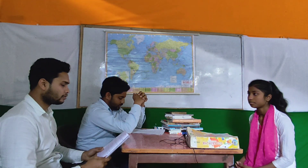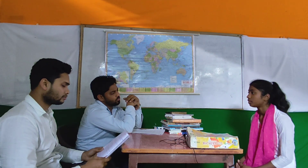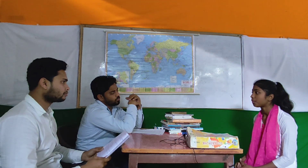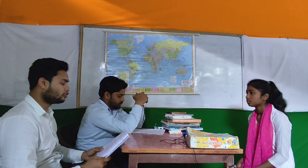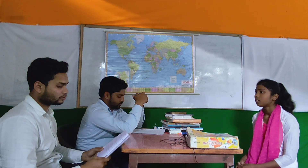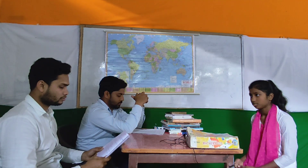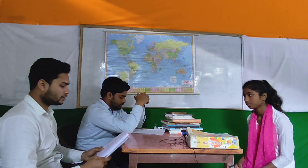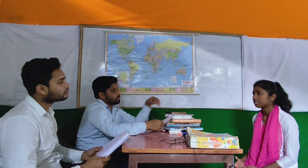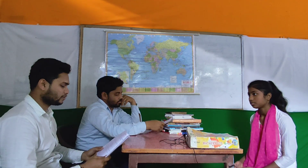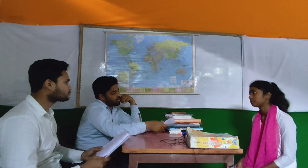What is the reciprocal of P upon Q? The reciprocal of P upon Q is Q upon P. What is the formula of volume of a cone? One upon 3 pi r squared. What is the supplement of 50 degrees? The supplement of 50 degrees is 130 degrees. Very good.